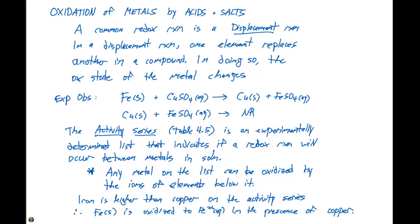This activity series allows us to predict whether or not a reaction will occur when we look at metals being placed in aqueous solution. Also notice that hydrogen is also in that list. Hydrogen gas being oxidized to hydrogen ions in solution will allow us to look at some of the properties when acids react with certain metals. This list can give us a lot of information if you know how to interpret it properly.